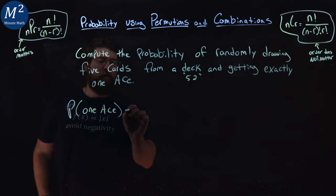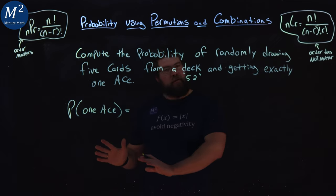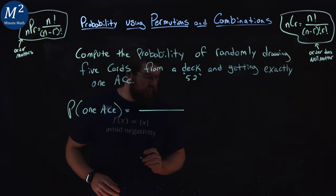So we're going to find the probability of getting exactly just one ace. We can't get two aces, can't get zero aces, just one ace from there.